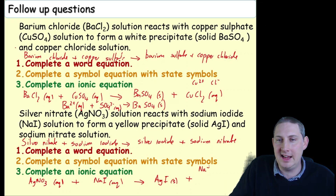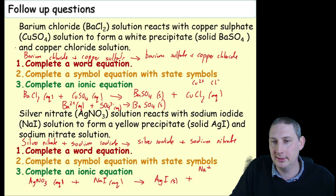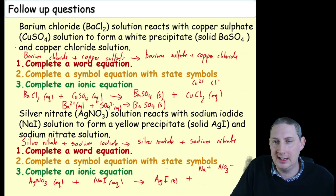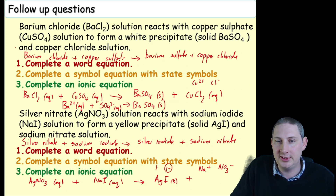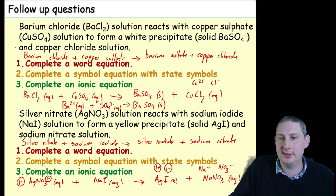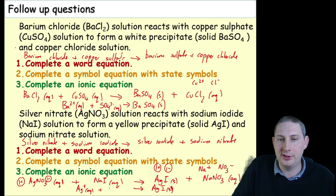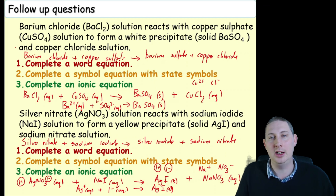For the charge on nitrate: silver is 1+, so nitrate must be NO₃⁻. If you forgot silver is 1+, you have the clue from iodide: iodine is group 7, so I⁻, meaning silver must be 1+, and therefore nitrate is 1−. For the ionic equation, we need what makes silver iodide: Ag⁺(aq) + I⁻(aq) → AgI(s). Hopefully by now ionic equations don't seem so scary.